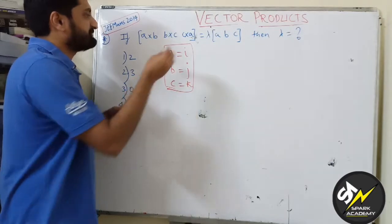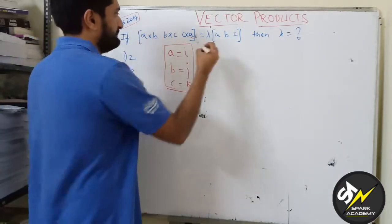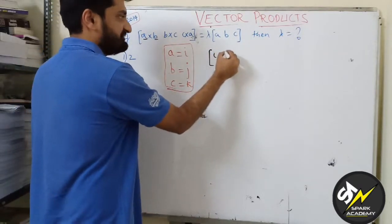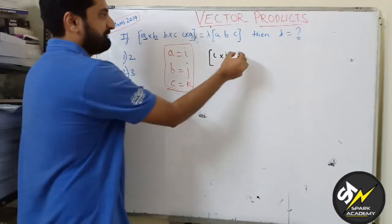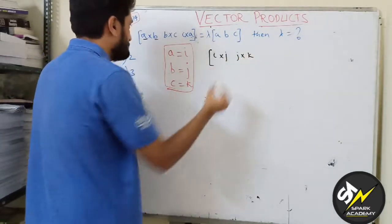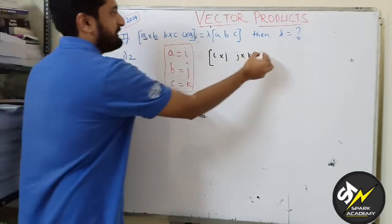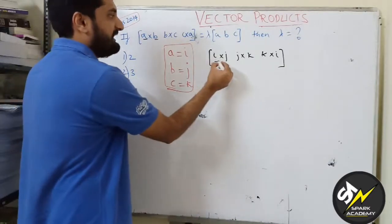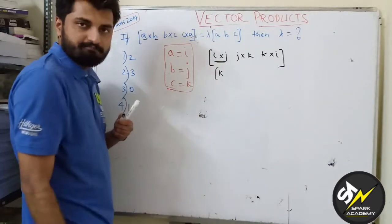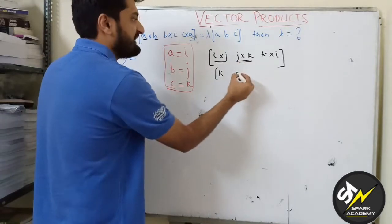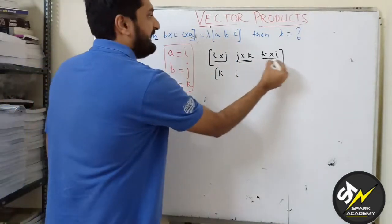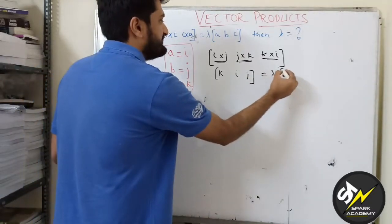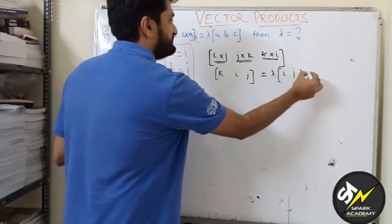Now if I substitute this, let's see. So this is a×b which will be i×j, b×c which will be j×k, c×a which is k×i. We know that i×j is k, j×k is i, k×i is j. And this I can write as λ times box(i,j,k).